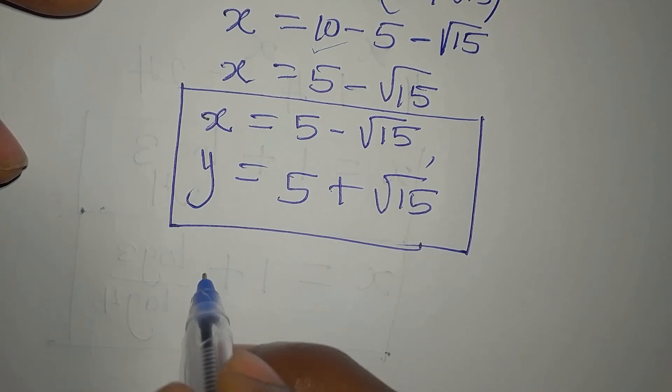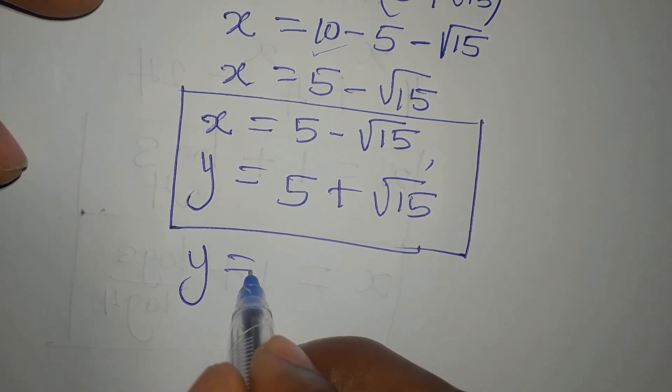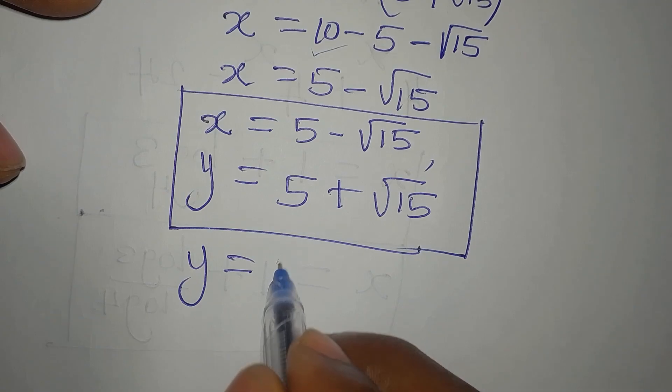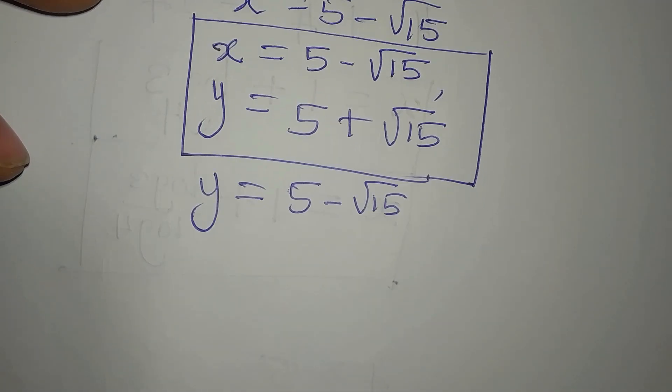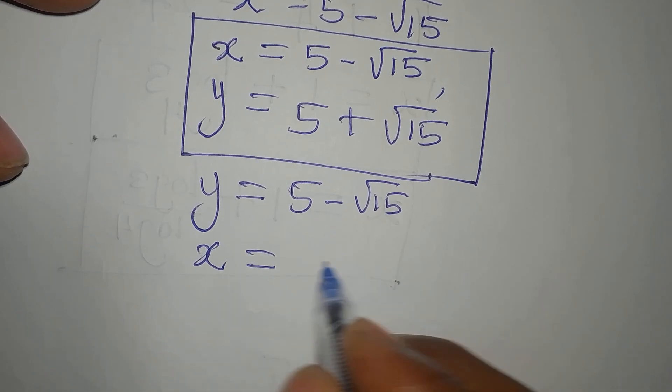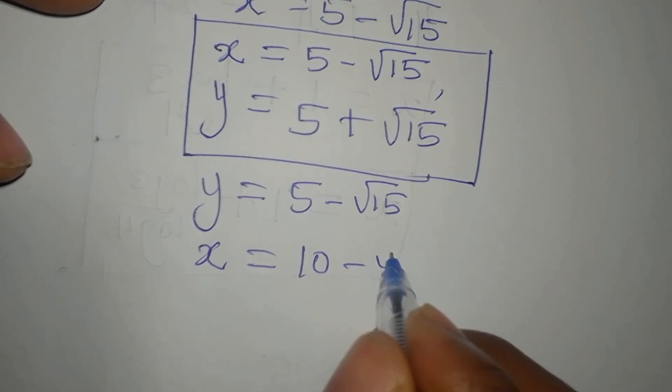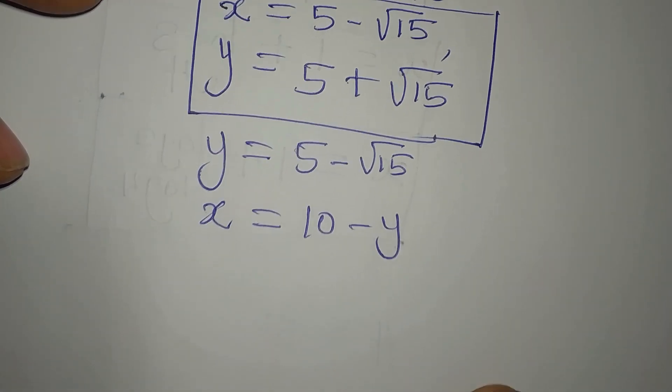Now, let us get another pair of solutions. We still have Y. The second value of Y is 5 minus root 15. And our X from equation 3 is 10 minus Y.